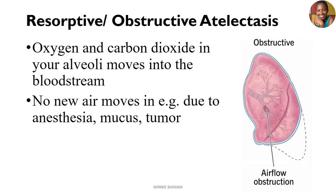Resorptive or obstructive atelectasis is a very interesting one because here air is moving into the bloodstream but there's no new air coming in to replace it. When we breathe in, air goes into the alveoli and through gaseous exchange gets absorbed into the blood while carbon dioxide exits. But in resorptive atelectasis, the air already in the alveoli gets absorbed correctly, yet no new air enters that space, placing the alveolus at risk of collapsing.